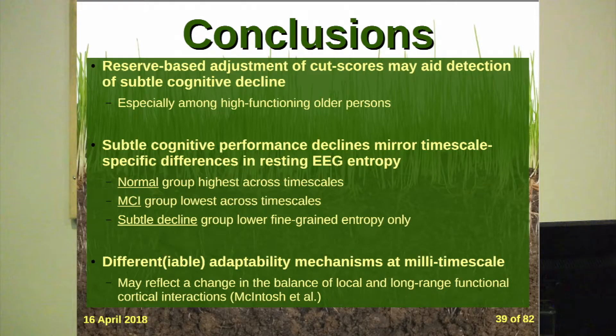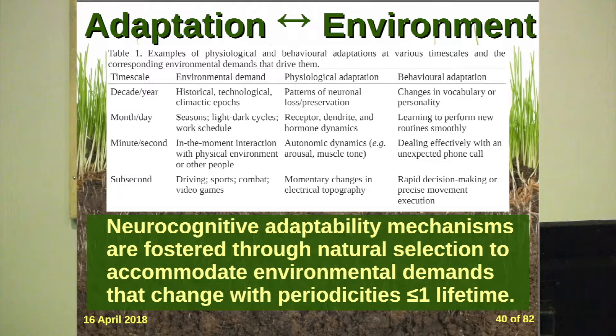Normal older brain function does show increased entropy at short timescales that is lost even in subtle decline, MCI, and dementia. But we do have preservation of long-timescale adaptability — I don't know what that means yet. McIntosh thinks it might reflect a difference in very local versus distant brain areas interacting. We know with aging that distant interactions become less important and it's more about local processing. Adjusting people's cognition for their own reserve, their pre-morbid education level, can increase sensitivity to detecting early declines, especially among high-functioning people.